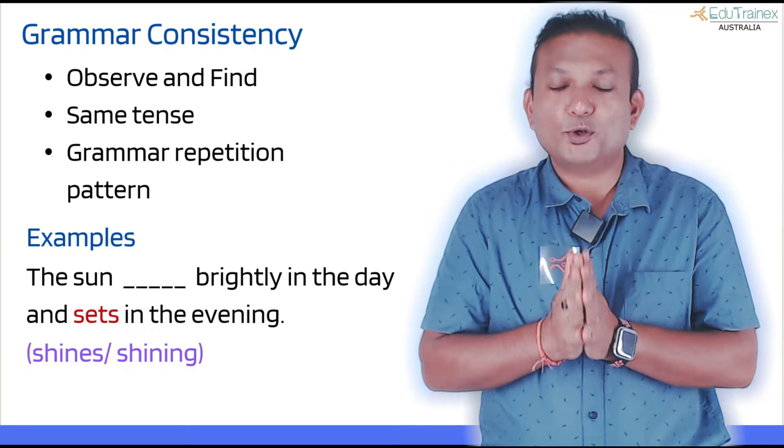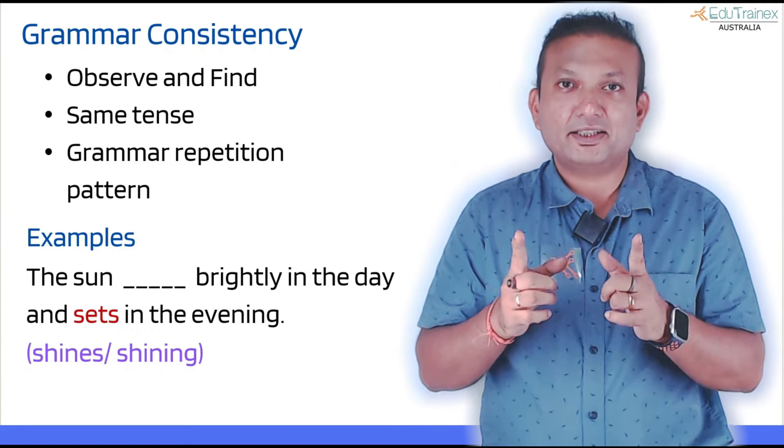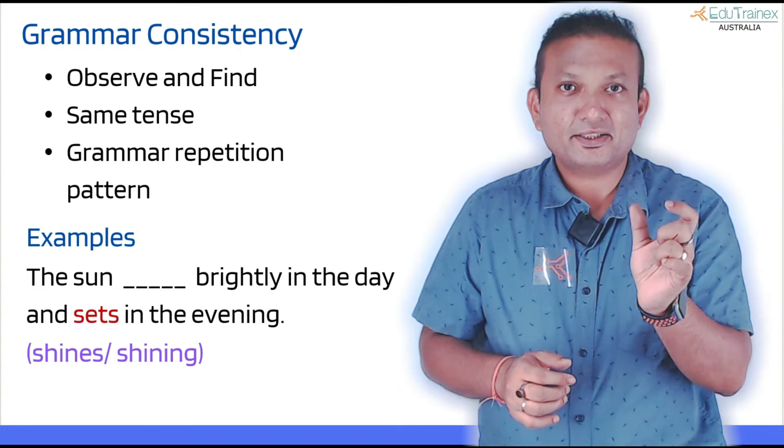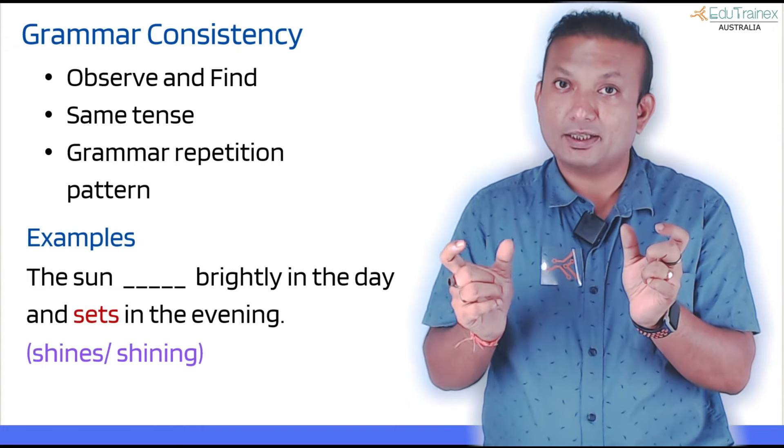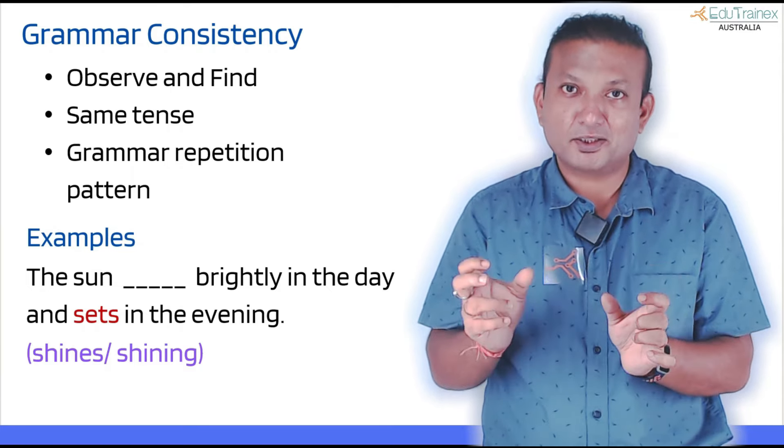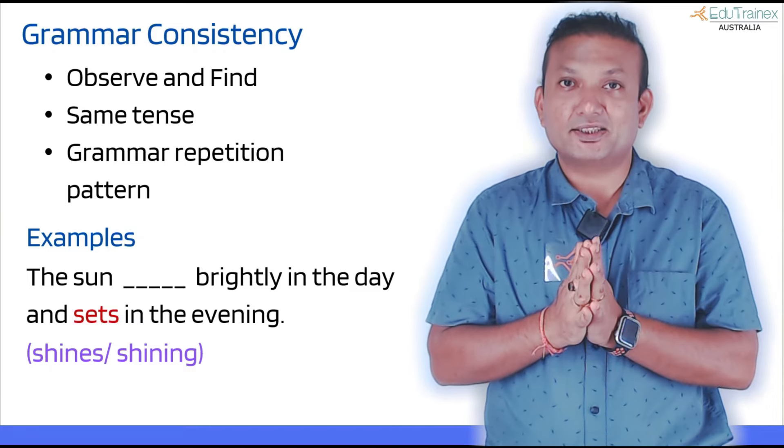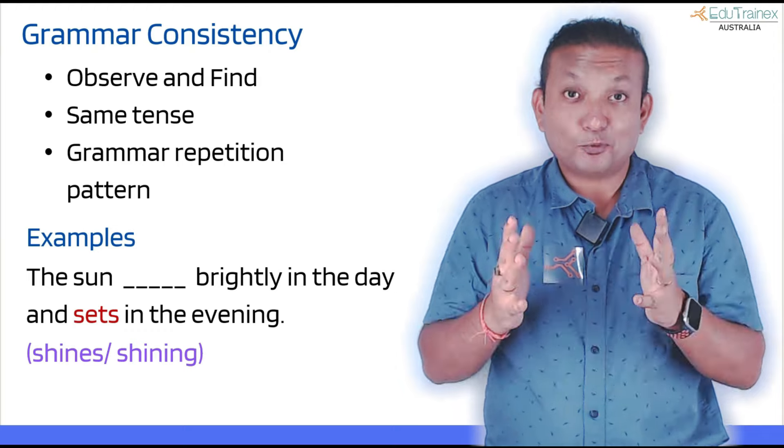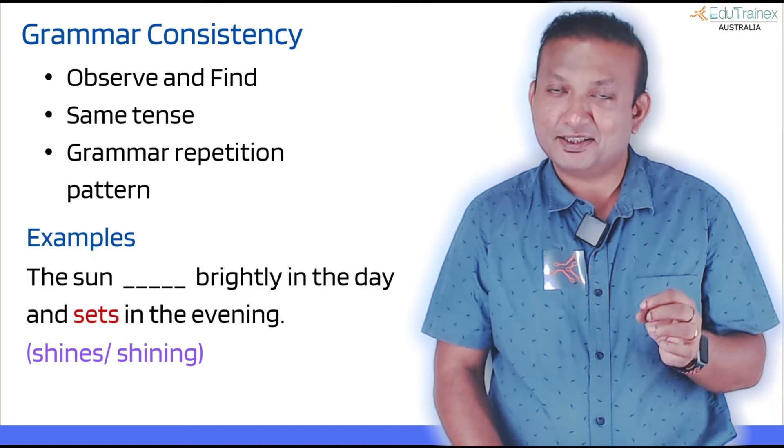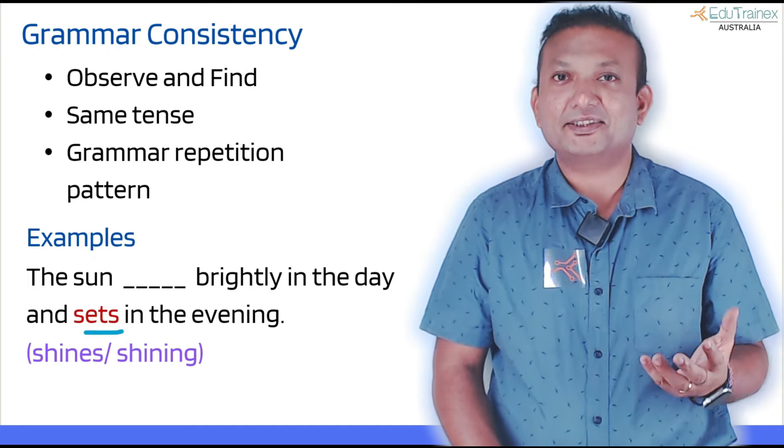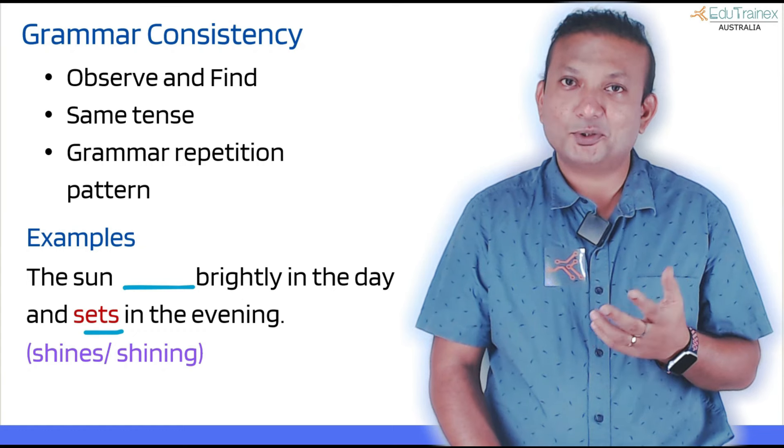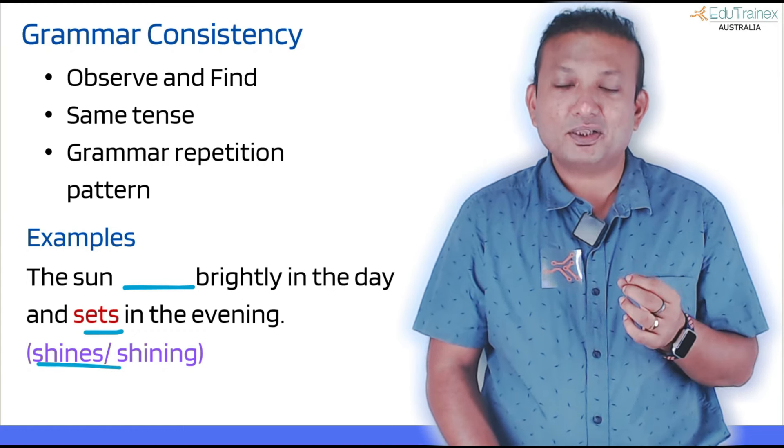Which is grammar consistency, very important. A single sentence in English language, if it is not a complex sentence, will always maintain the same tense. What I mean here is if you see a present tense verb is used in a sentence, and if there is another answer which is asking you to put another verb, it will be present tense. If one verb is past tense, then another one will also be past tense. And this applies for active voice sentences. So you only need to observe and find what the pattern is. Once you find the pattern, it will be easy to solve the question. See the example here: 'The sun blank brightly in the day and sets in the evening.' Clear hint is given to you: 'sets,' simple present tense. So what are you going to choose? Another verb here is required: 'shines' or 'shining.' 'Shines,' isn't it? Isn't that simple? If you identify a grammar pattern, your life becomes really easy in the exam.